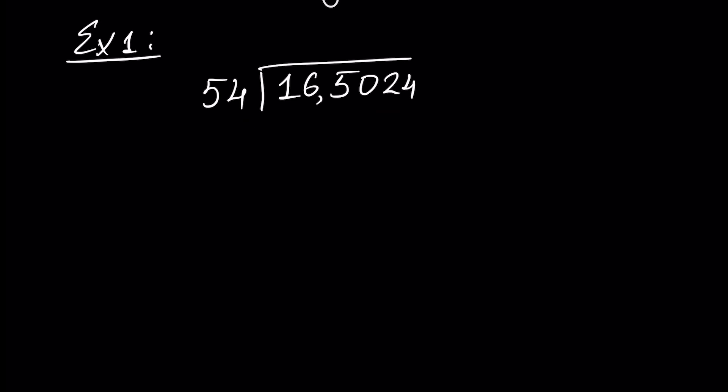First of all, let's look at number 16. Since 54 consists of two digits, we take two digits — it's 16. How many 54s we have inside 16? Zero. We write 0 and we write the decimal point. Next, we look at the three-digit number 165.